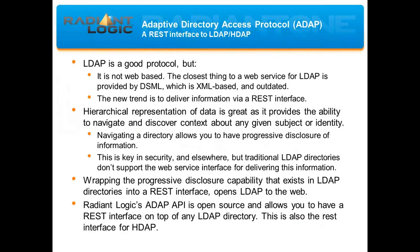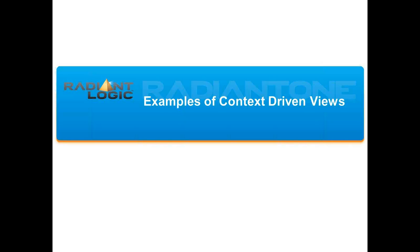Even though today the majority of our customers still use LDAP as the protocol to access the Federated Identity Service, it's quickly becoming outdated and the trend is to deliver information via a REST interface. For this purpose, RadiantLogic has created what we call the Adaptive Directory Access Protocol, or ADAP. This API is open source and allows you to have a REST interface on top of any LDAP directory, supporting all LDAP operations and the ability to navigate the directory tree. This REST interface is also what we use for HDAP, so ADAP is the REST interface to HDAP, and we're in the process of presenting this API to Kantara right now to get it approved as a standard.